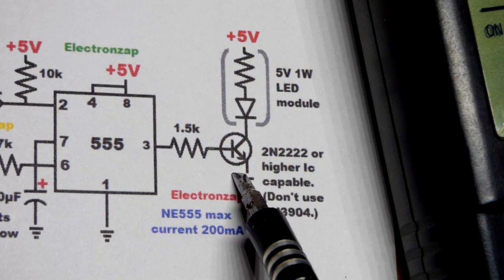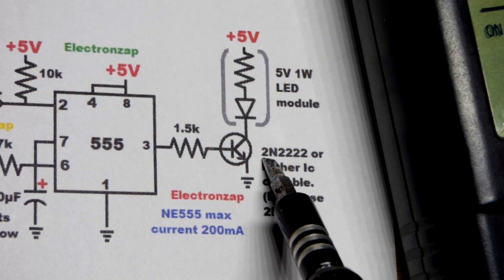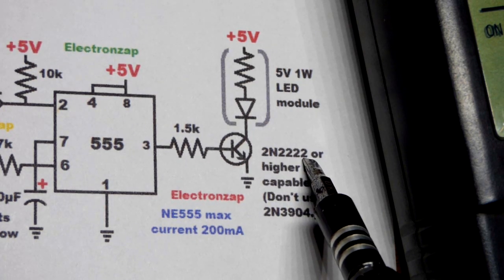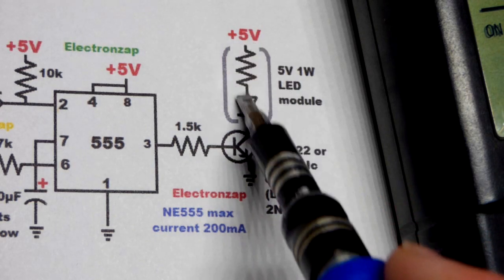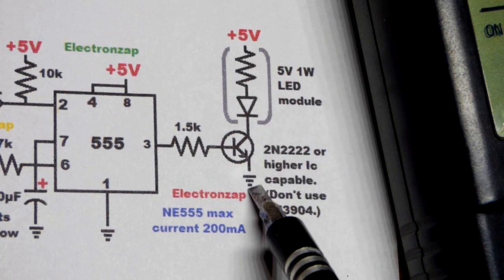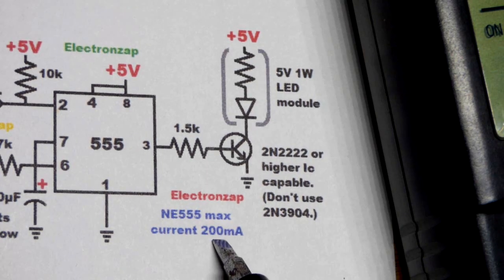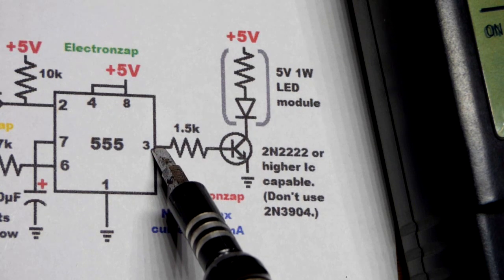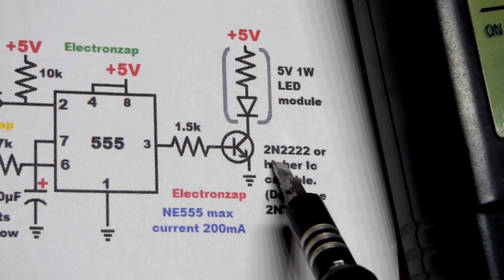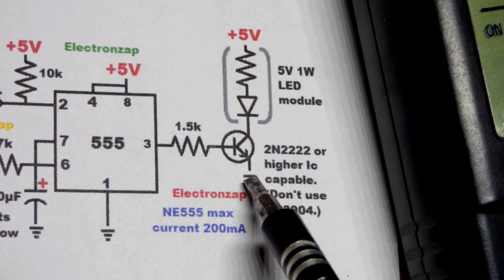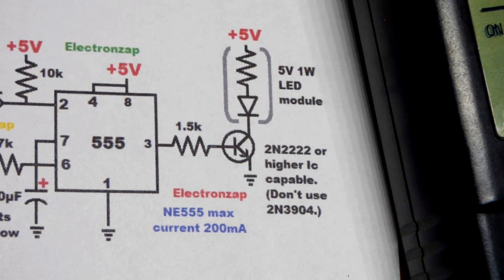So now zooming in a little closer, we have the NPN bipolar junction transistor. I'm using the 2N2222 because it can handle a maximum of 600 milliamps of current through the collector, which also goes through down to the emitter right there. 2N3904 has a limit of 200 milliamps of current. That's the maximum. Same with the output of the 555 timer. That's why we have the 2N2222. It can handle about 600 milliamps of current flowing through it when it is on.